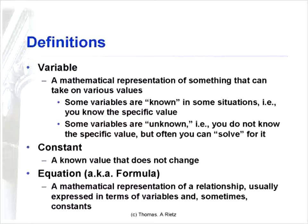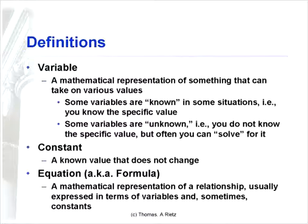Some variables are unknown. For example, today's high temperature I don't know yet, but it will become known — by tomorrow I will know it. The return on a stock might be unknown, but when it's realized, I will know it. And some variables are unknown and must be solved for — for example, you may have the price of a stock and the dividends being paid along with a forecasted growth rate, and from that you may have to back out and solve for the return investors are demanding.